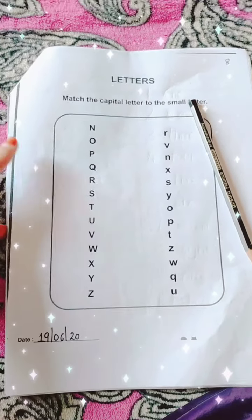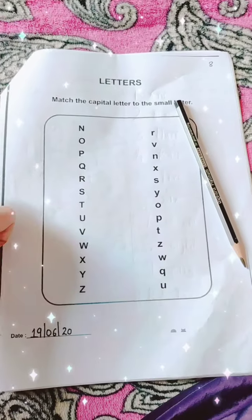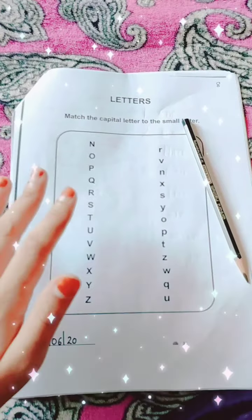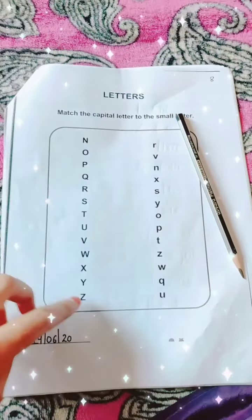Hello children, now in this second worksheet, we are going to match the capital letter to the small letter. We have done this yesterday from A to M. So today we will be doing from M to Z. Okay, so let's begin children.